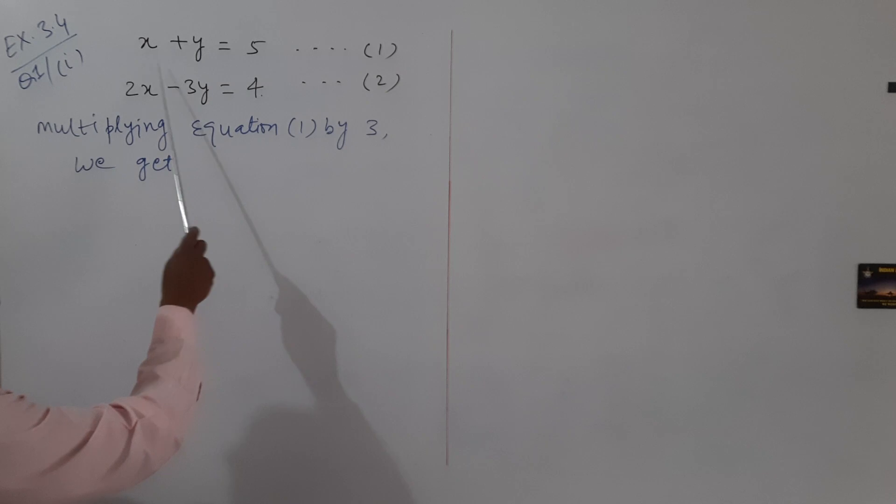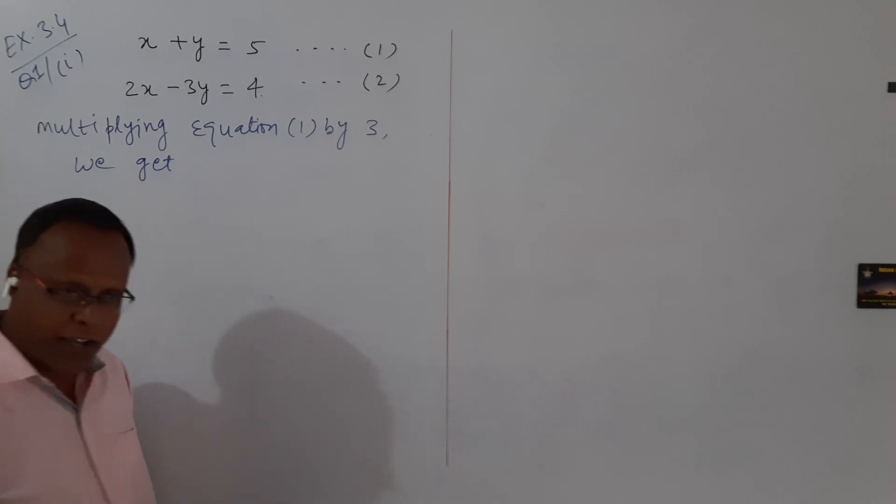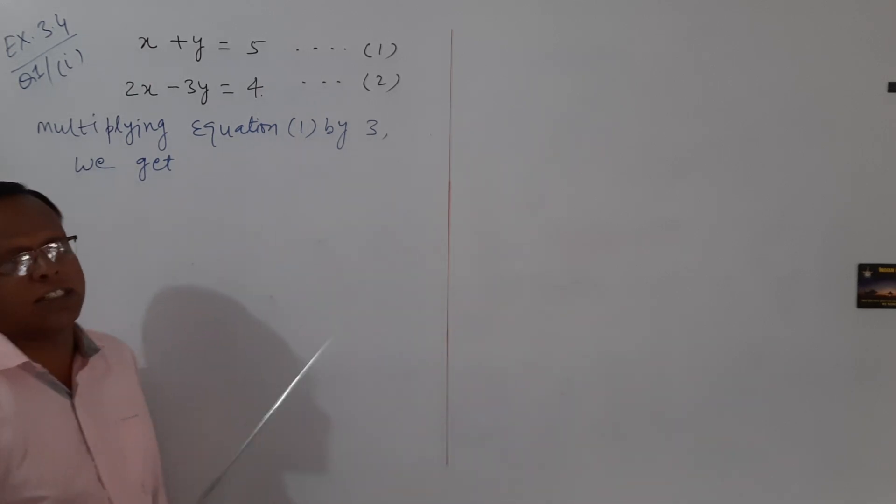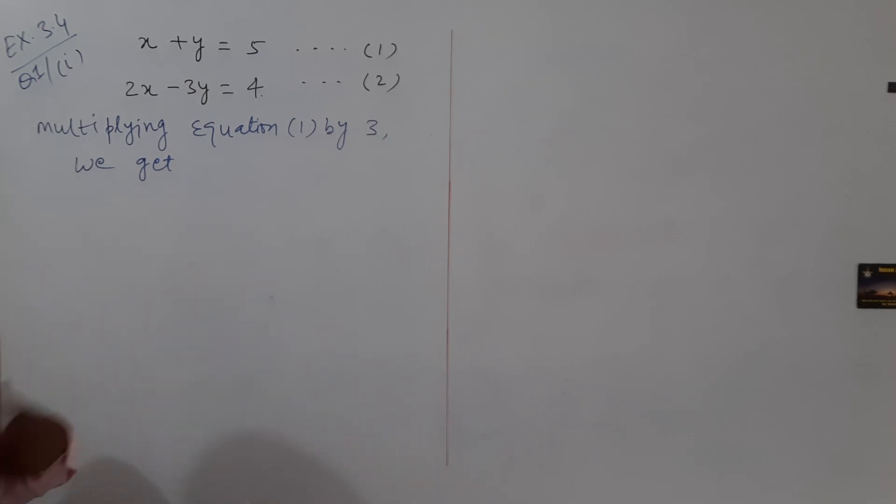You can multiply by 2 also. In that case, the coefficient of x becomes the same and we will get the value of y first, then we substitute the value of y in any one equation to get the value of x.